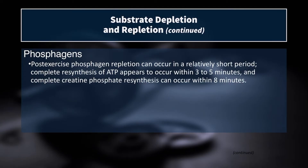It actually takes quite a while to replenish ATP and creatine phosphate. Complete resynthesis of the ATP used during very intense exercise, especially repeated bouts, takes up to three to five minutes. And complete resynthesis of creatine phosphate takes up to a full eight minutes. This means that if you're doing heavy weight training, you should be resting at least three minutes between heavy taxing sets.